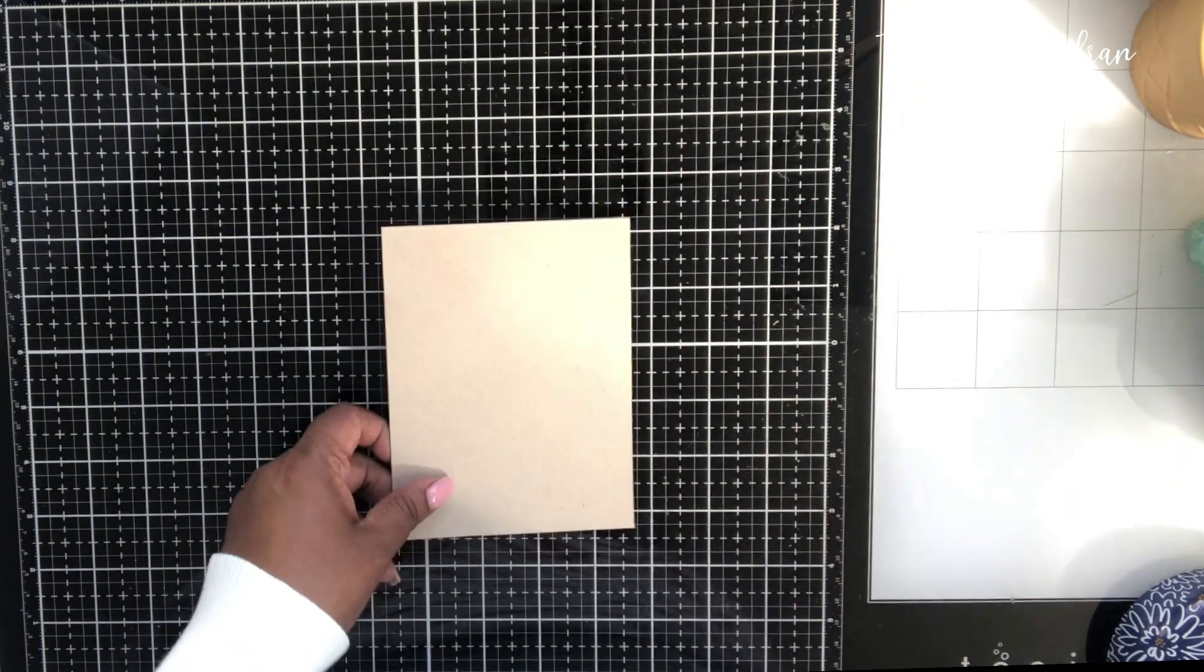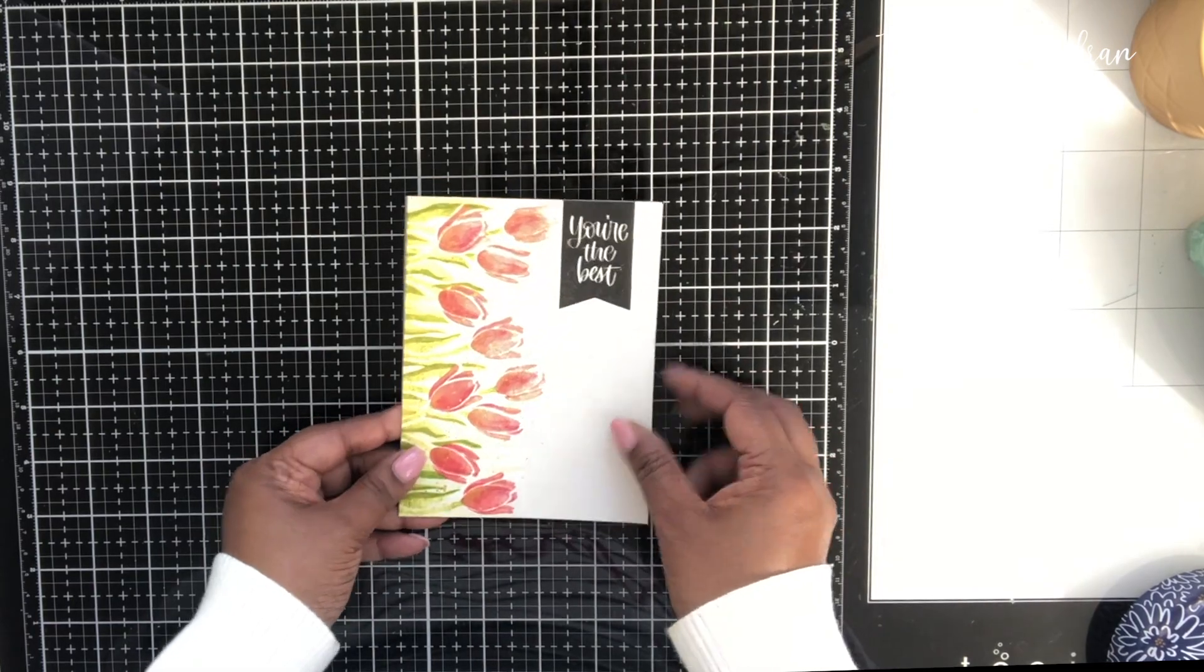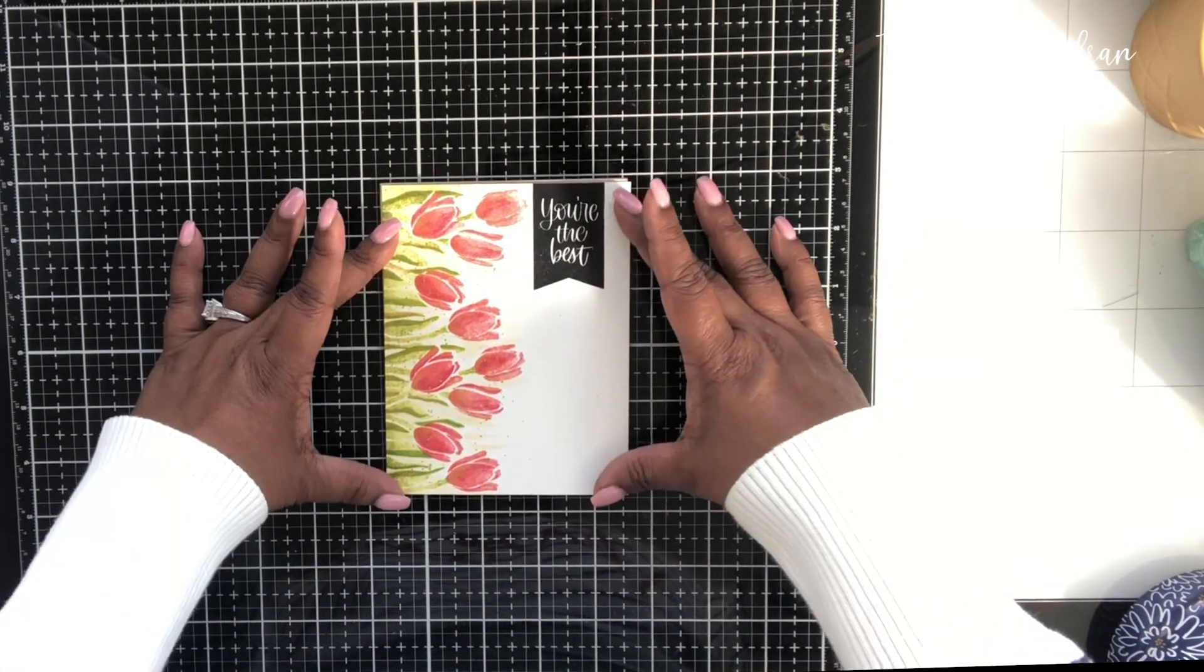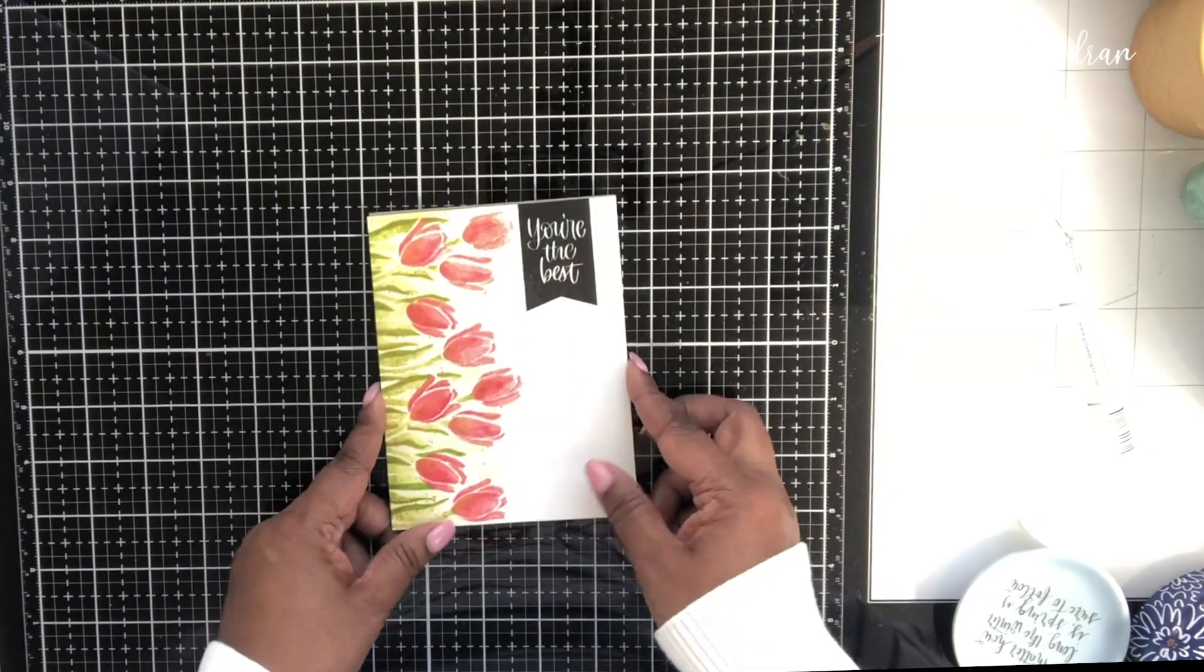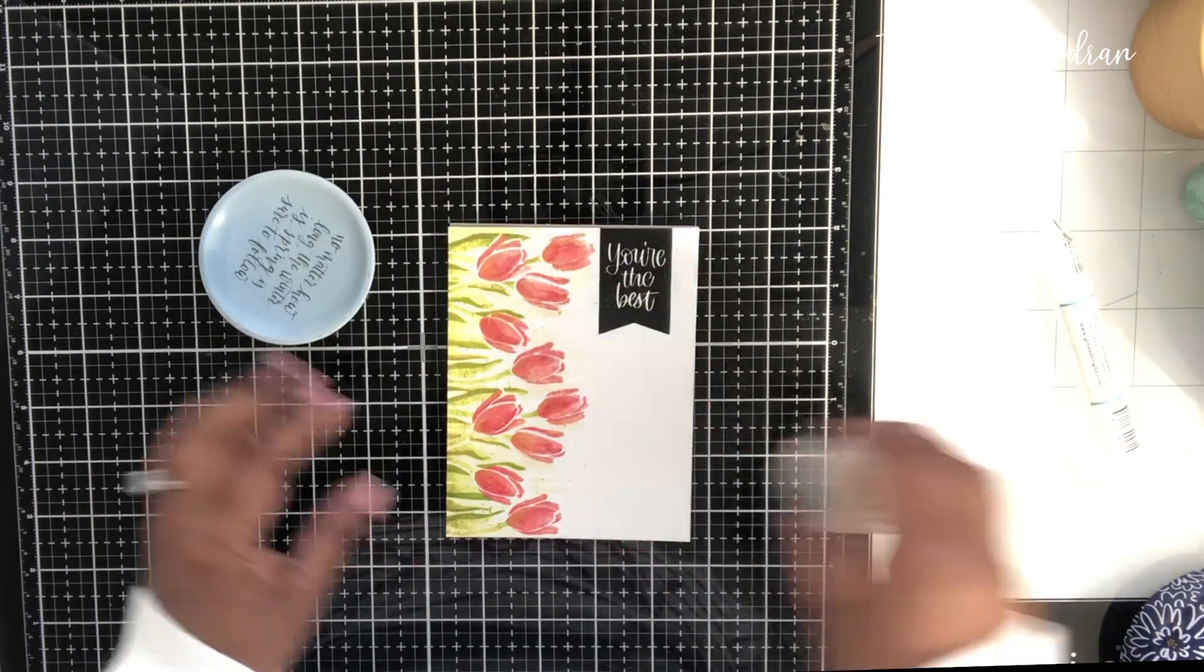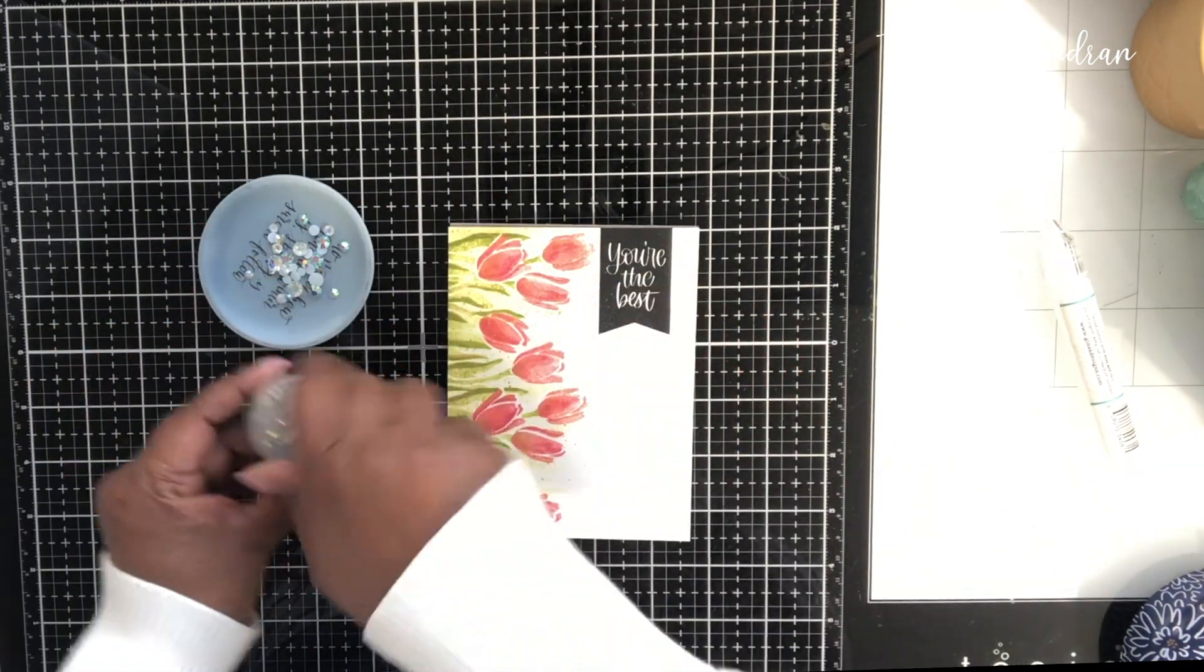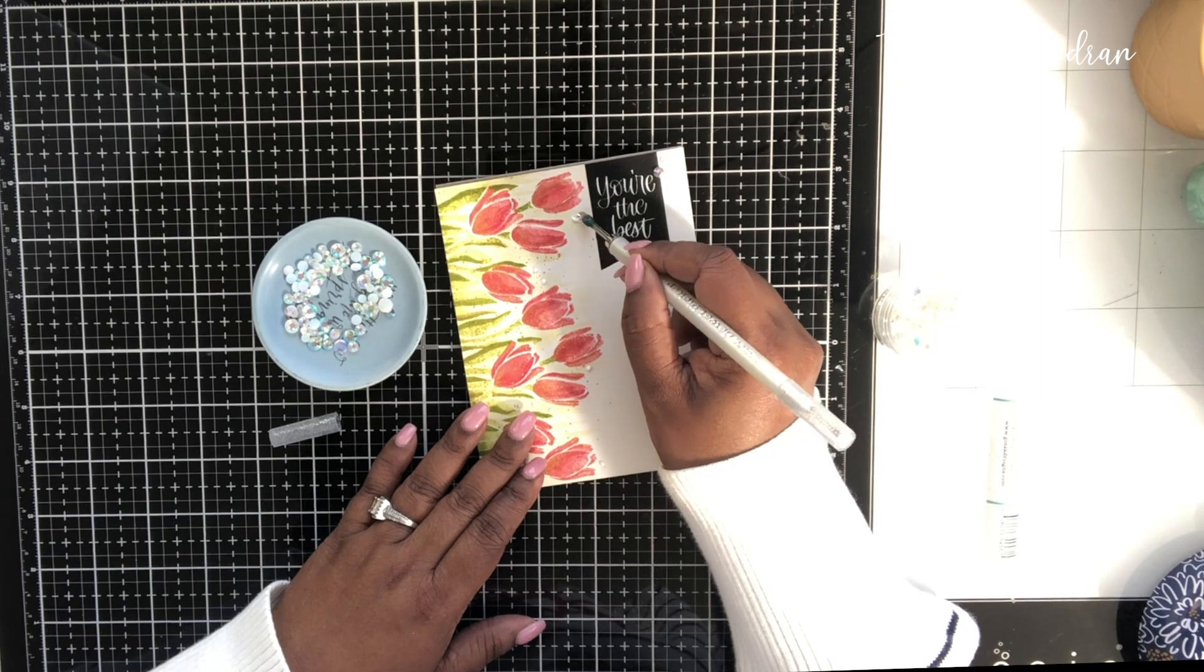Then I took a top folding craft card stock and I laid this without giving any lip like a border around it. I just laid it directly onto the front panel.